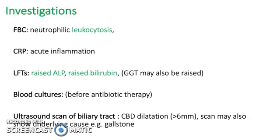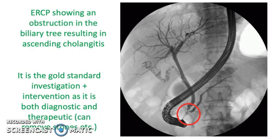Investigations include FBC to look for neutrophilic leukocytosis, CRP for acute inflammation, LFTs for raised ALP or raised bilirubin, and blood cultures before antibiotic therapy to identify the causative organism. An ultrasound scan of the biliary tract is also performed. ERCP is the gold standard investigation and intervention as it is both diagnostic and therapeutic, shown here with an obstruction in the biliary tract resulting in ascending cholangitis.